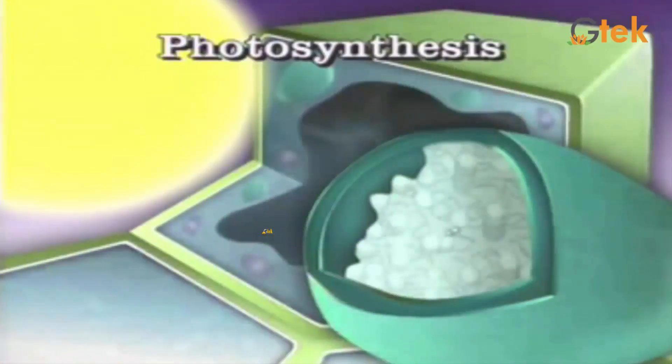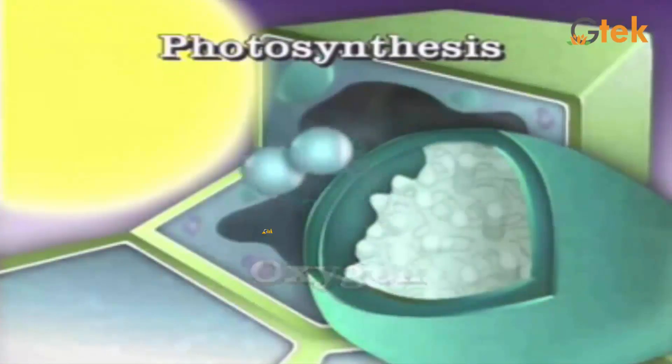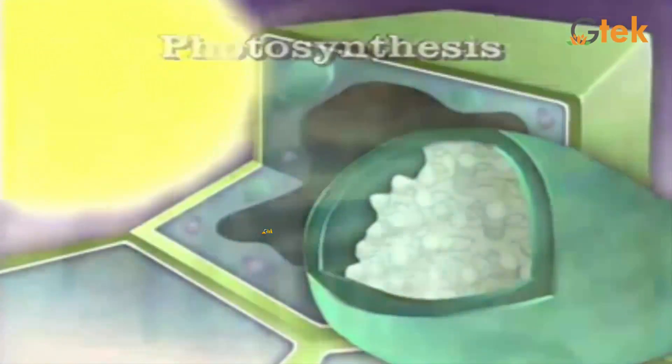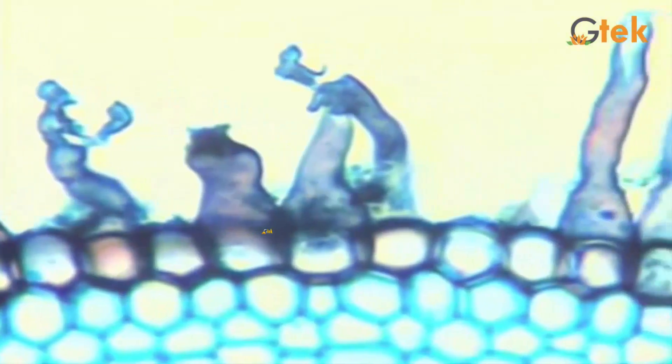Then it gives oxygen, which is important for breathing. Normally the photosynthesis process is carried out in daytime because light is the most important factor for photosynthesis. Now we will see in detail about cell structure.